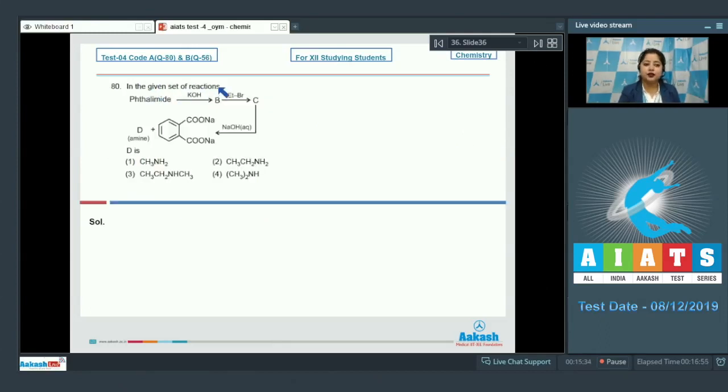In the given set of reactions, starting with phthalimide when reacts with potassium hydroxide gives B, which when reacts with ethyl bromide gives C, which on further reaction with aqueous NaOH gives sodium salt of phthalic acid and a compound D which is amine. We have to identify D which can be methane amine, ethane amine, N-methyl ethane amine or N-methyl methane amine. It is very clear that the reaction given is Gabriel phthalimide synthesis.